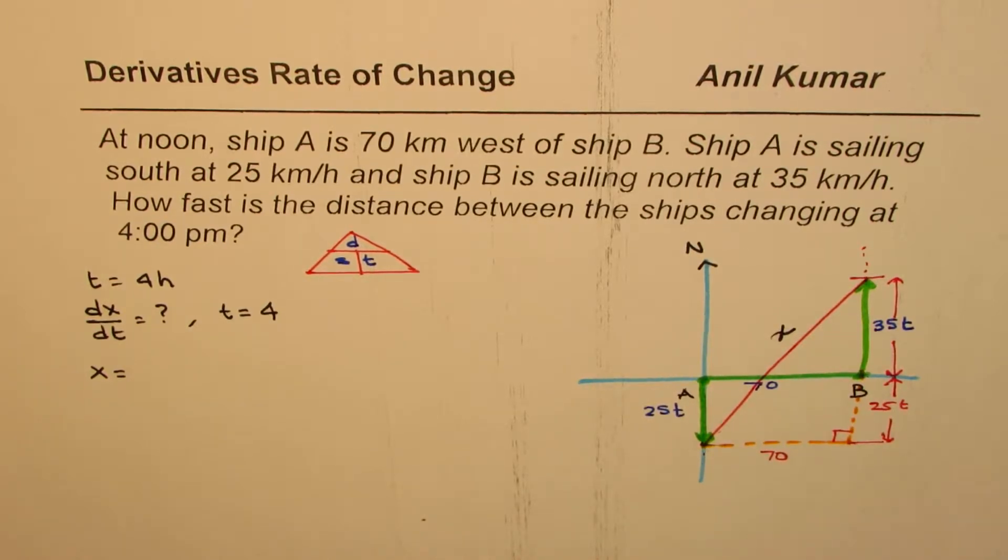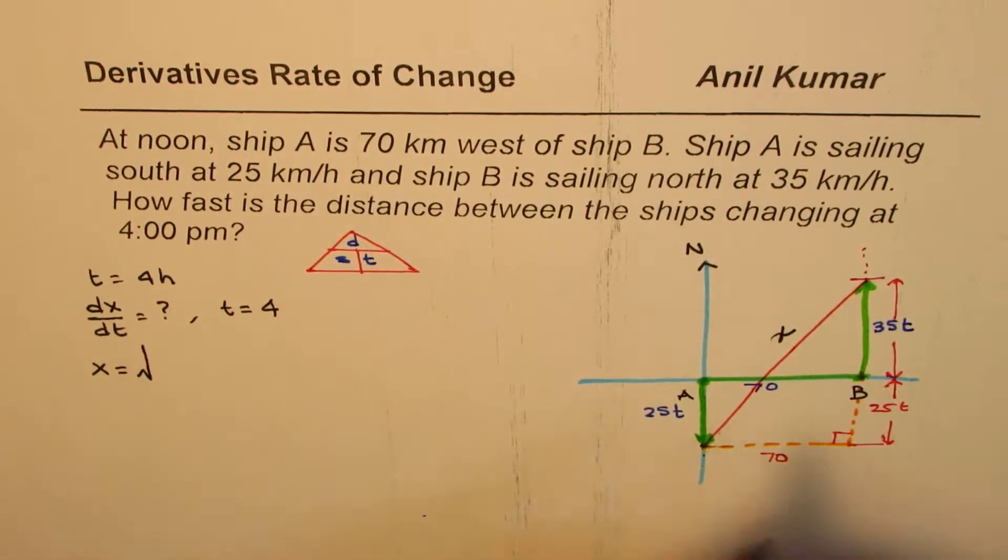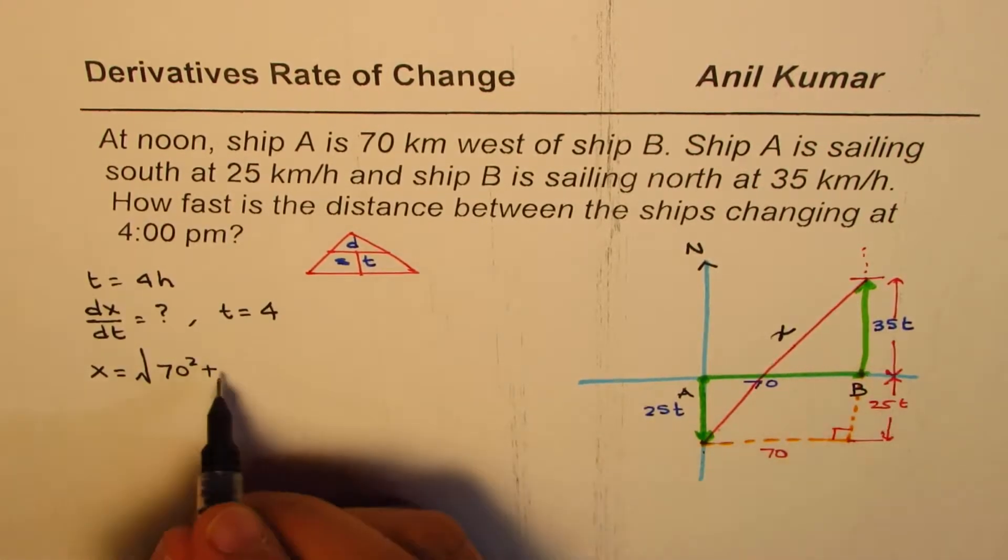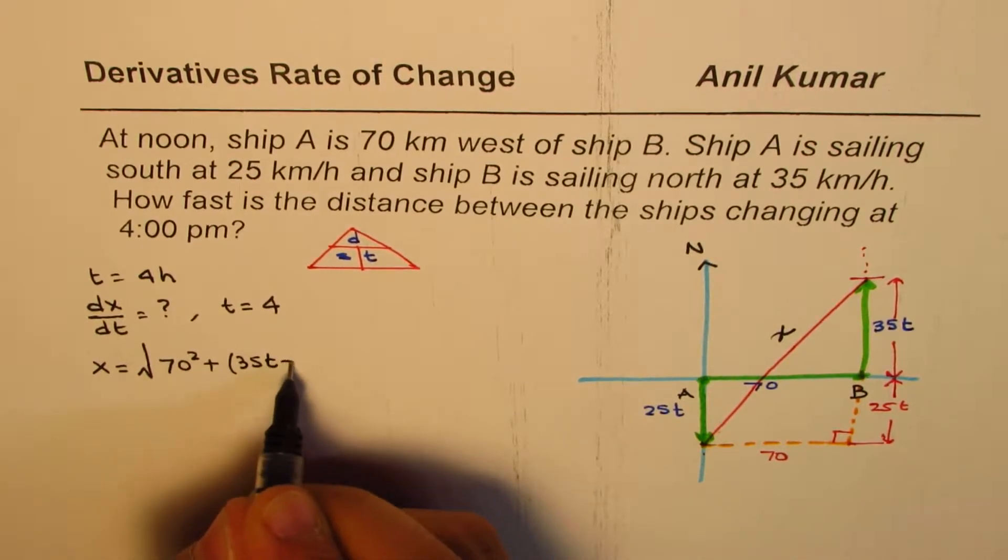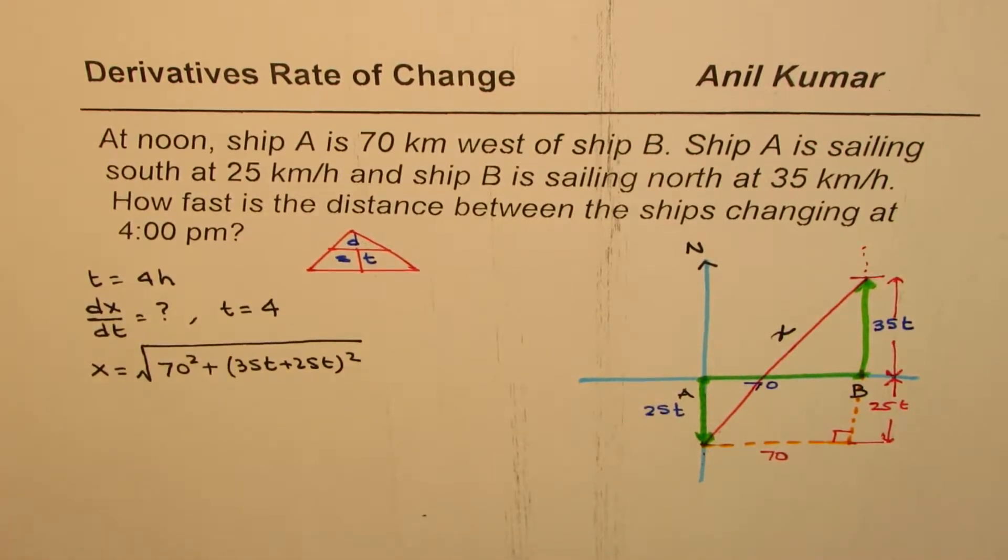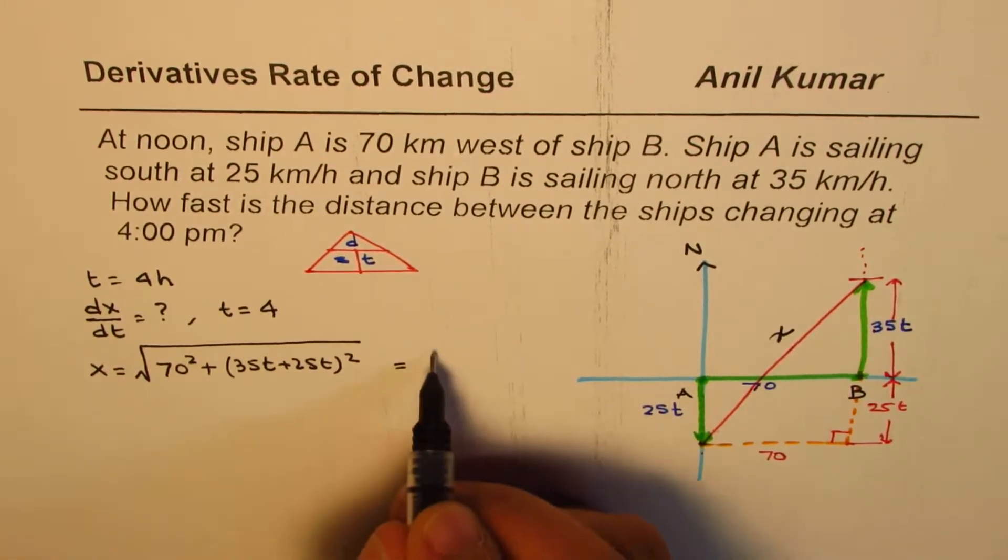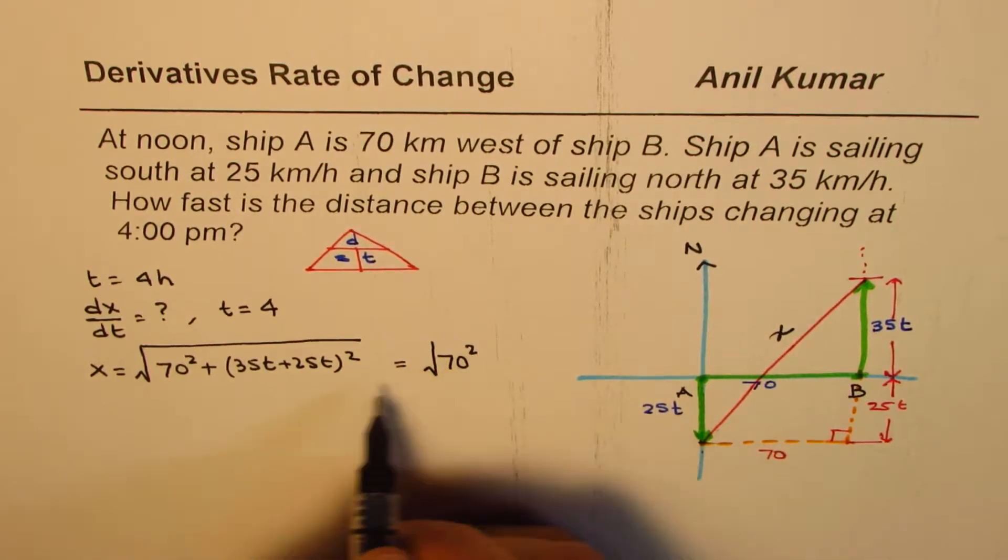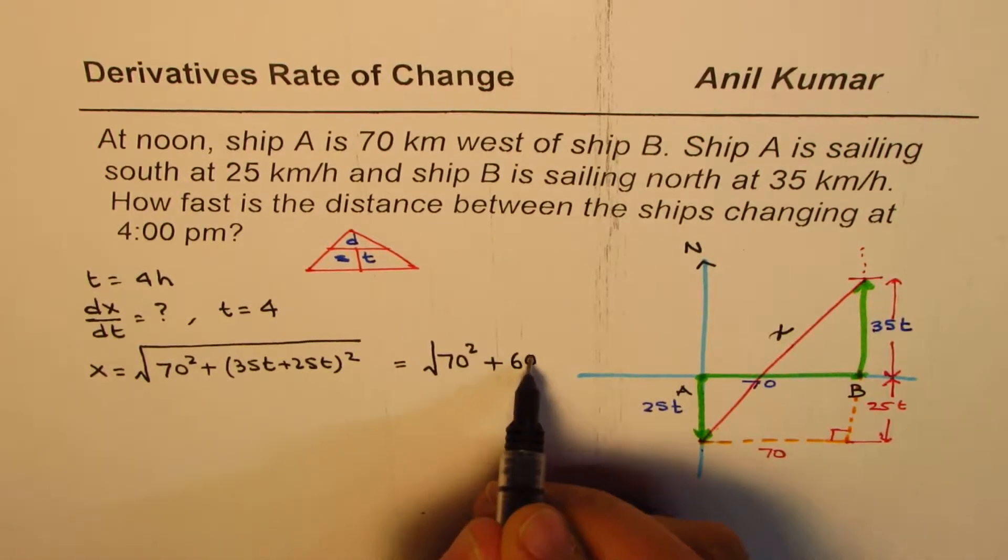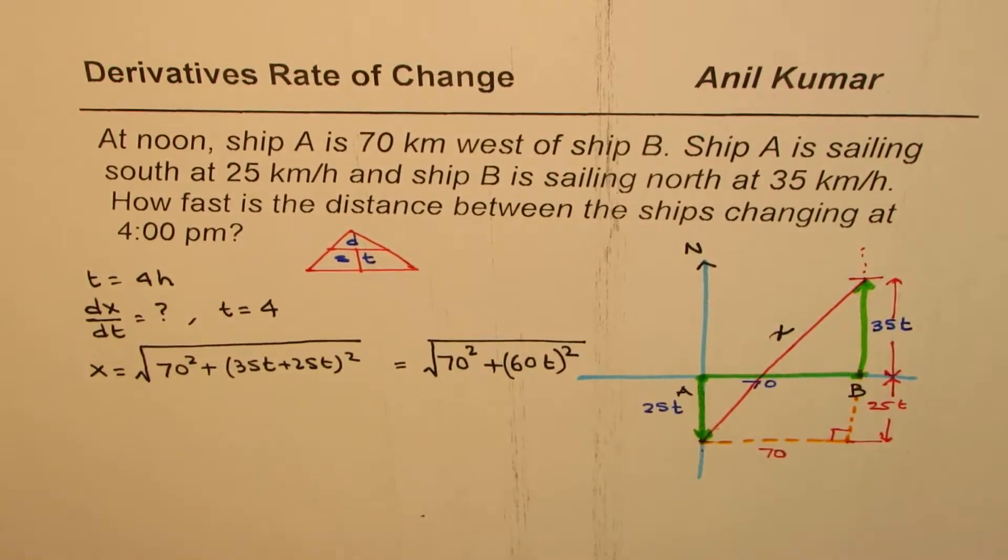Using this triangle, we can find x in relation with time T. 70 remains constant. We will use Pythagorean theorem to write x as equal to square root of 70 square plus (35T plus 25T) whole square. Let me combine these two terms and write it as 70 square, which is just a constant, plus adding these two will give us 60T whole square.